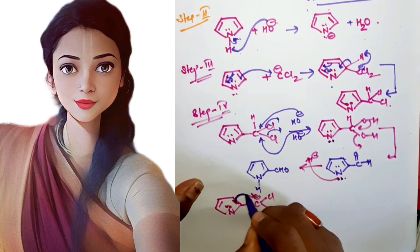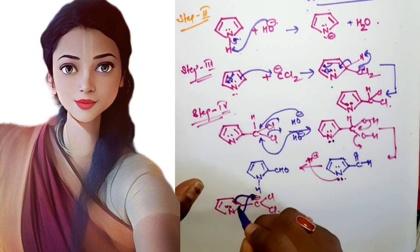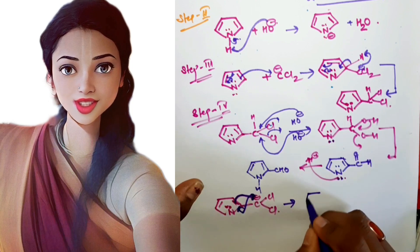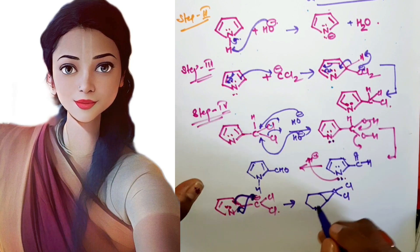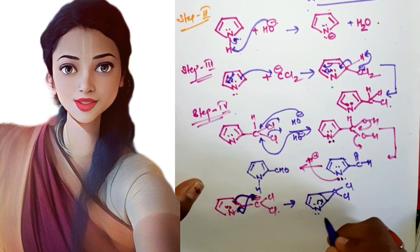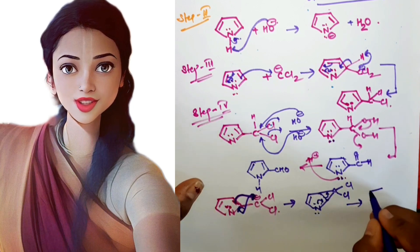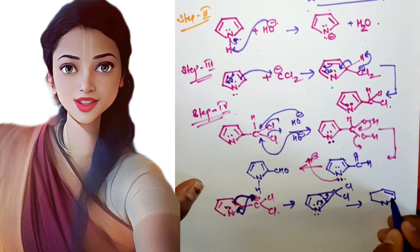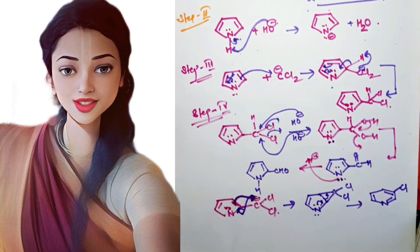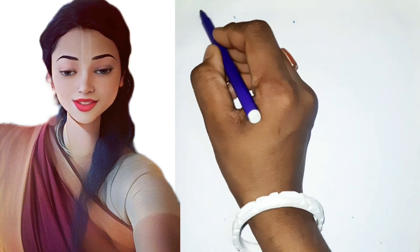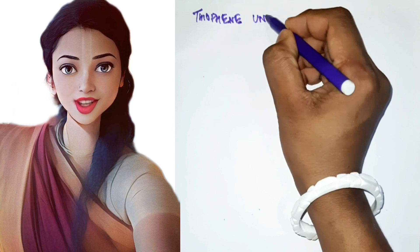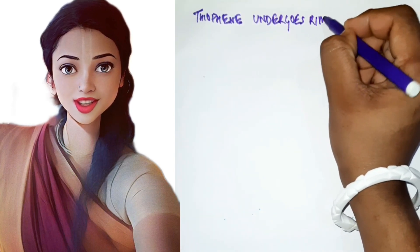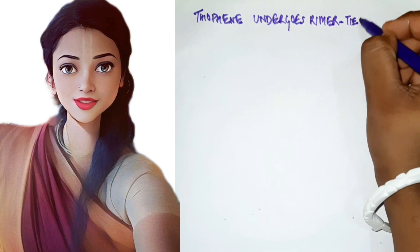In the abnormal Reimer-Tiemann reaction there are two products. If an electron shift takes place within the molecule to form a cyclic intermediate, there is also formation of a pyridine ring with a chlorine atom. This is a byproduct of the reaction. Next, we will see how thiophene undergoes the Reimer-Tiemann reaction.